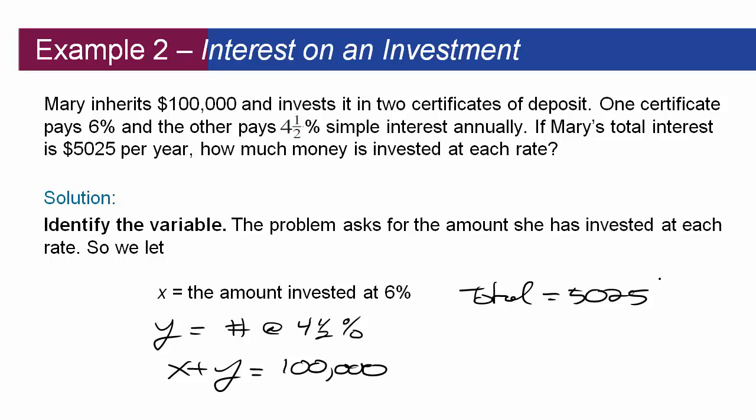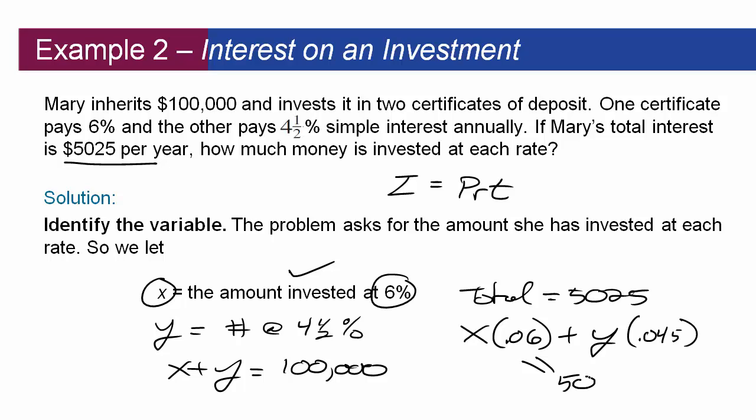Well how do we get interest? It's interest equals principal times rate times time. Well here's our principal. Here's how much we invested. Here's our rate as a decimal. And our time is one year because it said $5,025 per year. So time is going to be one in this case. So we can figure out how much interest we get from these two things because total interest is going to be X times 0.06. That's how much interest she makes off this account. And then we have to add how much she makes off the second account which is Y times 0.045. And that whole amount has to equal 5,025.